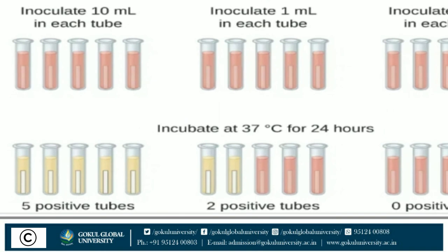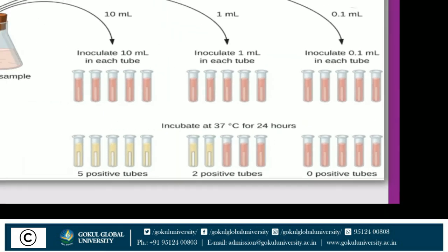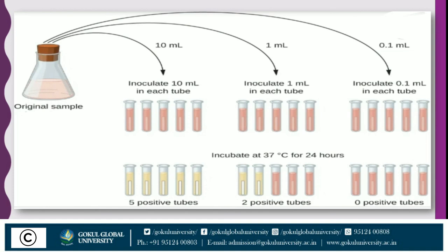In group 1, all 5 tubes are positive. In group 2, only 2 tubes are positive. And group 3 contains 0 positive tubes. You record your result, and these results are compared with a McCrady table, given by scientist McCrady. You can then check the probable number — not the actual number, but the probable number of organisms present.